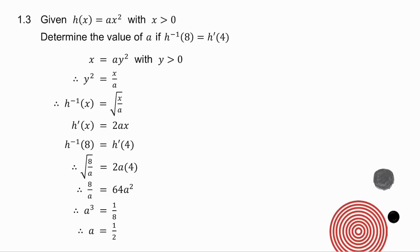1.3, they ask me to determine the value of a if the inverse when x is 8 is equal to the derivative when x is 4. So I've got to think carefully with this one. How do I get the inverse? Well, remember with the inverse, in place of y goes x, and in place of x goes y, including with the condition.